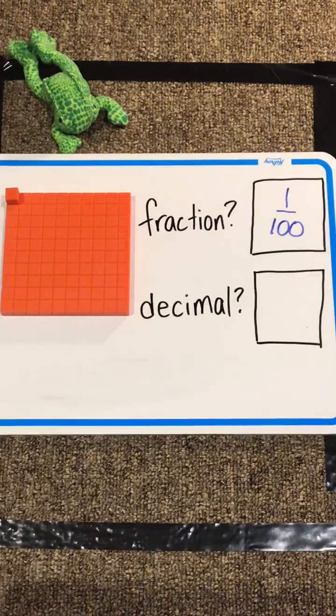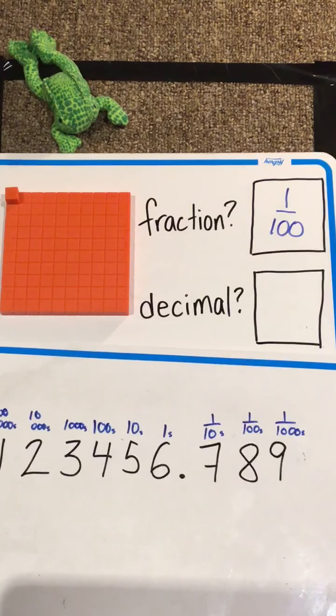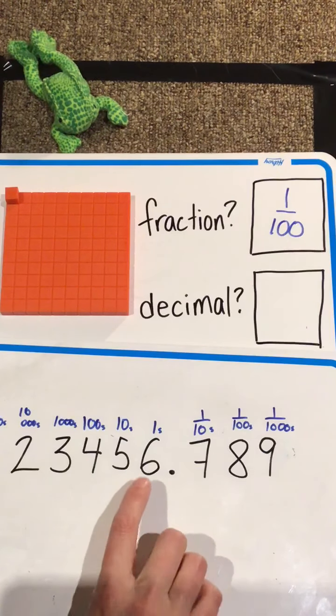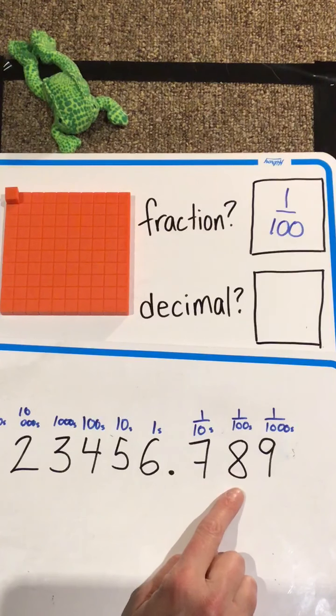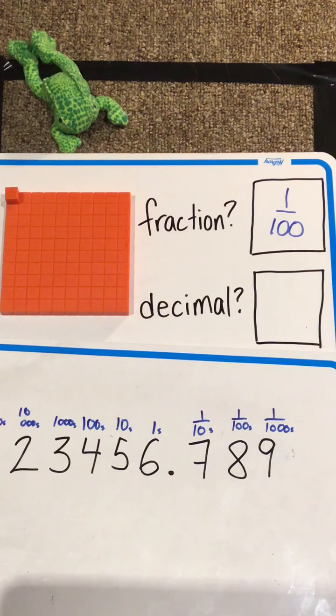And then to figure out what the decimal is going to be, we're going to go back to that place value chart that we made, showing what each of the columns are. So we look for the one hundredths, here we are. So it is two spots to the right of the decimal place.